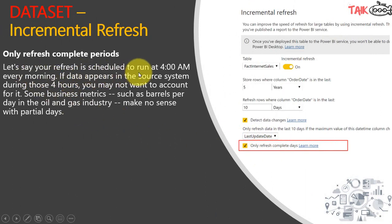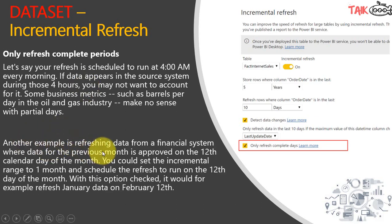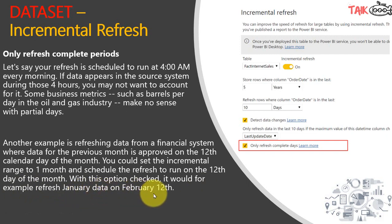For example, if your refresh is scheduled to run at 4 AM every morning and data appears in the source system during those hours from 12 AM to 4 AM, you may not want to account for it. Some business metrics such as barrels per day in the oil and gas industry make no sense with partial days — you need to track daily output rather than hourly. Another example is refreshing data from a financial system where data for the previous month is approved on the 12th calendar day of the month. You could set the incremental range to 1 month and schedule the refresh to run on the 12th day — it would refresh January data on February 12th, only after which you can consider the January values.